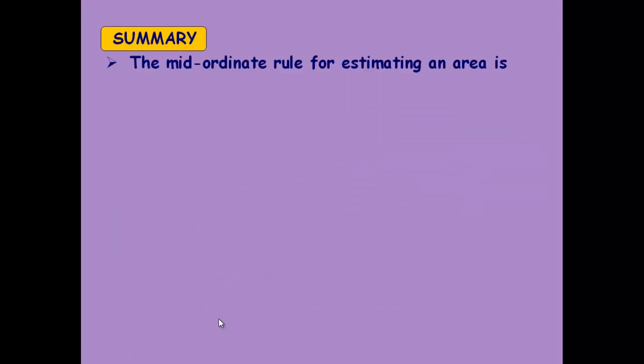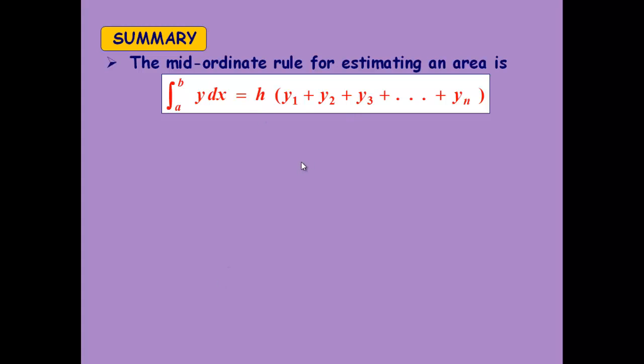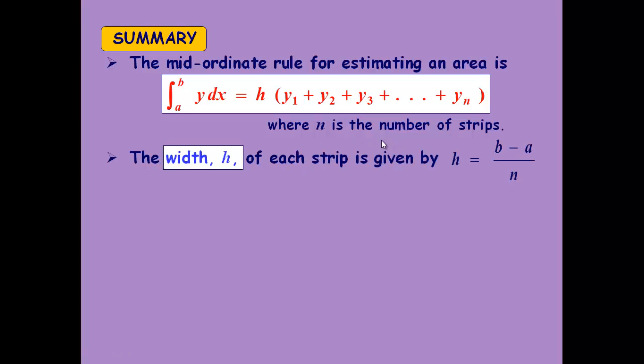So to summarise, that's the formula we use. It's in the formula booklet. n is the number of strips, h is the width of each strip, and it's always the same. And we find it out by the upper limit minus the lower limit divided by the number of strips.